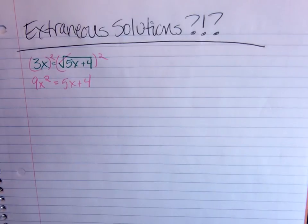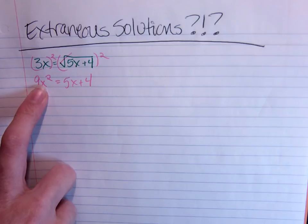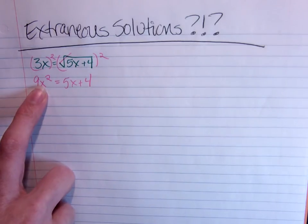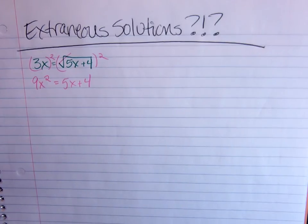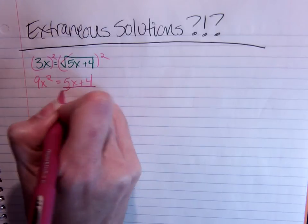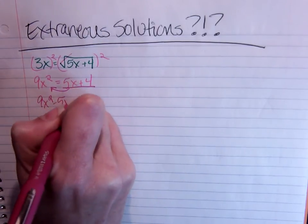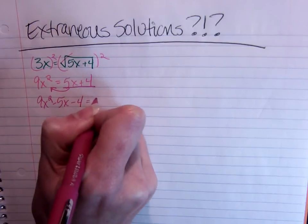This is the first time though that we've ended up with an x squared we have to deal with. Remember, way back to when we were doing quadratic equations, I need this equal to 0 before I can do anything. To make that happen, I'm going to move the 5x and the 4 to the other side, and I get 9x squared minus 5x minus 4 equal to 0.